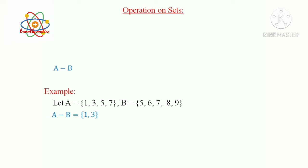Similarly, we can also construct a new set whose elements are in B but not in A. For this, we delete the common elements of A and B from set B. That is, the set of all elements x such that x belongs to B but not in A. Clearly, the set is {6, 8, 9}. This is defined as B−A. That is, B−A = {6, 8, 9}. That is, cancel the elements 5 and 7 from B.